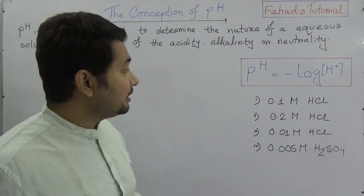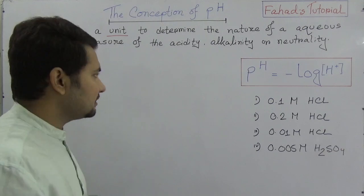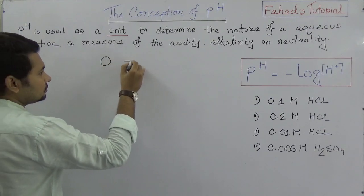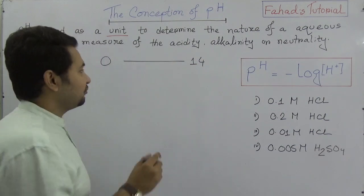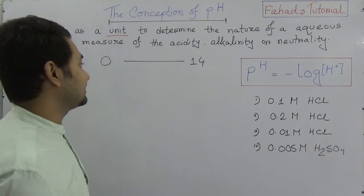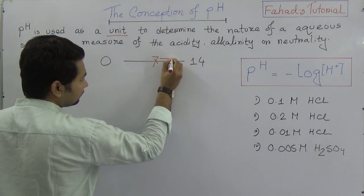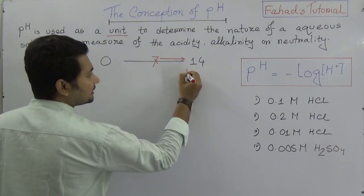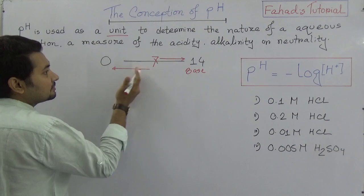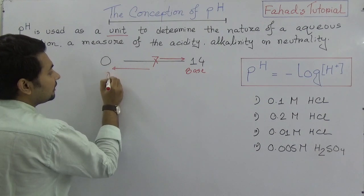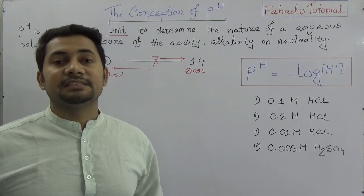We know that pH is the negative logarithm of H+. Is there any range of pH? Yes, it's about 0 to 14. The neutral level of pH is 7. When you go from 7 to 14, you'll find base, and when you go from 7 down to 0, you'll find acid. So the question is, why is 7 the neutral level?